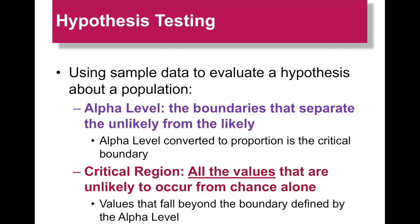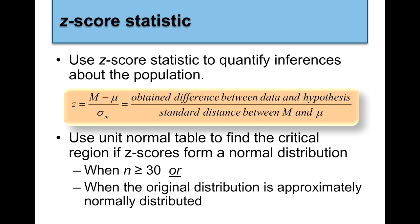The critical region is all the values that are unlikely to occur from chance alone. Any values that fall beyond the boundary defined by the alpha level are considered the critical region. With the z statistic, we're using that z score to quantify inferences about a population. Z equals the obtained difference between the mean and mu, divided by the standard distance from the sample mean to the population mu. We use the unit normal table to find that critical region. We can use z as long as our sample size is larger than 30, or we know the samples are pulled from an approximately normally distributed population.